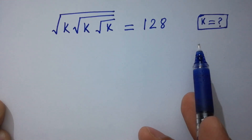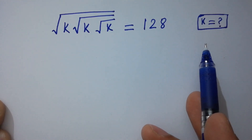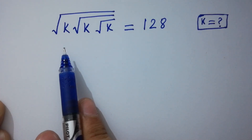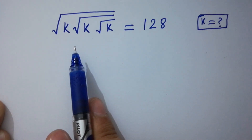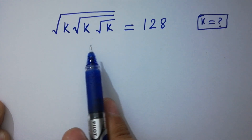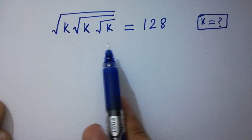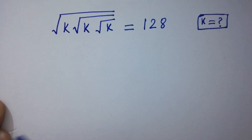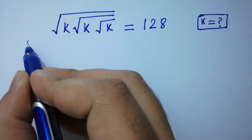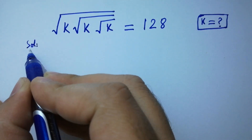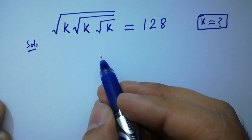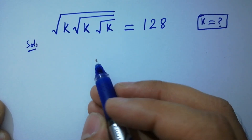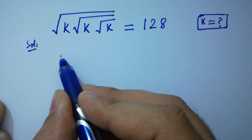Hello friends, find the value of k if square root of k times square root of square root of k times square root of square root of square root of k equals 128. Let's have a solution. To solve this, you should know that square root of k...